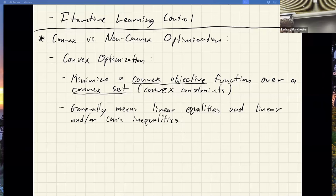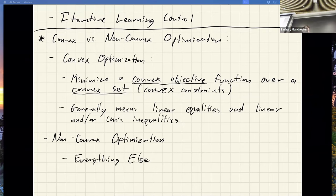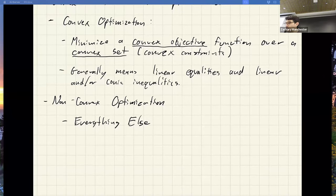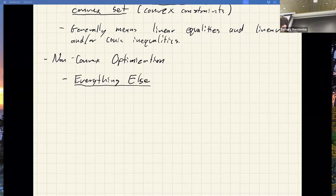Non-convex optimization literally means anything else — anything that doesn't follow those convex rules. Maybe you have nonlinear dynamics constraints, non-convex keep-out or collision constraints — anything else puts you in non-convex land. Most things we care about are non-convex, so I wanted to make a comparison table and talk about some of the key differences.